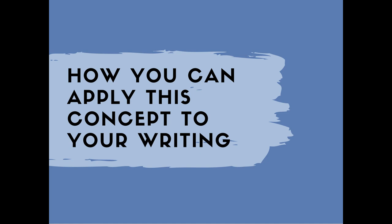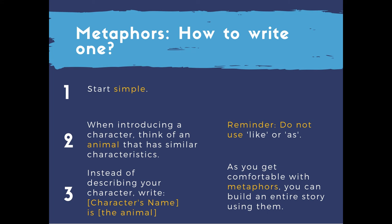Now let's talk about applying metaphors into your own writing. Step one: start simple — metaphors can get pretty deep, so let's start small. Step two: when introducing your character, think of an animal that has similar characteristics, like how a bear has similar characteristics as a large man. Step three: instead of describing your character, simply write 'your character's name is your chosen animal' — for example, 'Frank is a bear.' And as a reminder, do not use the words 'like' or 'as'; if you do, that would be considered a simile.